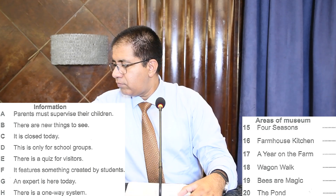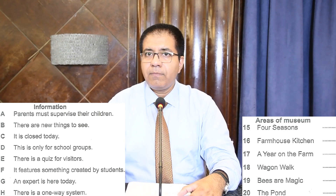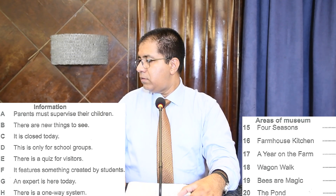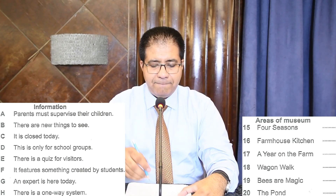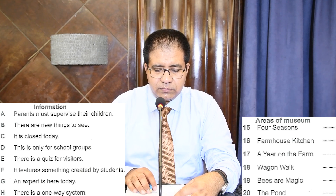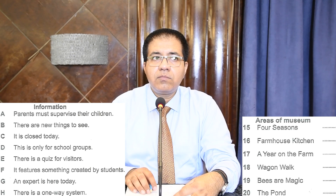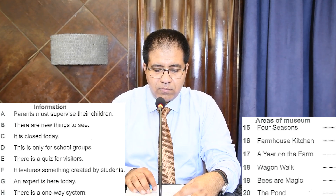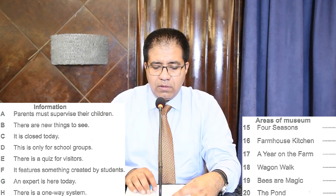[Audio clip] 'I'd like to tell you about the different areas of the museum. Just inside and outside the main gallery we have an area called Four Seasons. Here you can watch a four-minute animation of a woodland scene. It was designed especially for the museum by a group of young people on a film studies course, and it's beautiful — children absolutely love it, but then so do adults.'